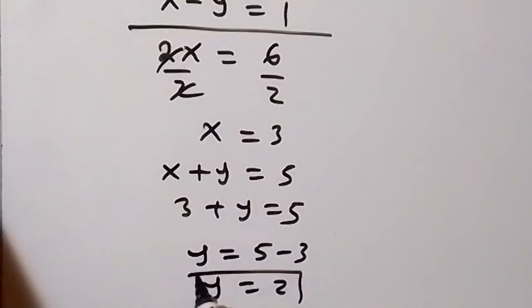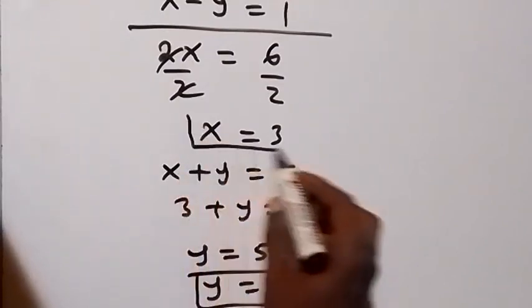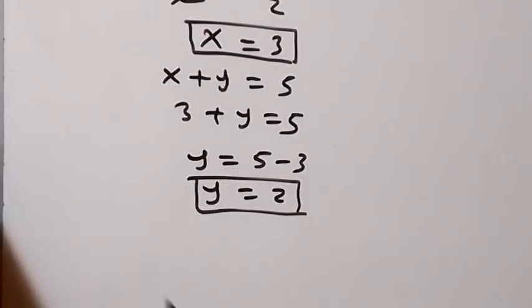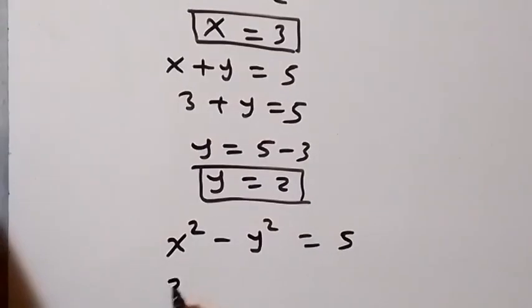So we have from here x equals 3 and y equals 2. Then let's check from what we have. That is, from x squared minus y squared equals 5. Here x is 3, that's 3 squared. And y is 2, that's 2 squared. Is this equal to 5?